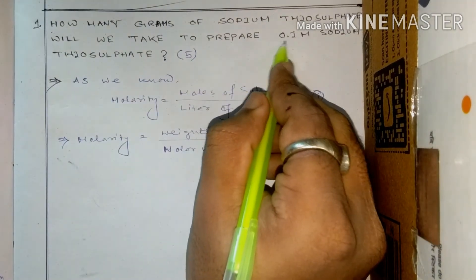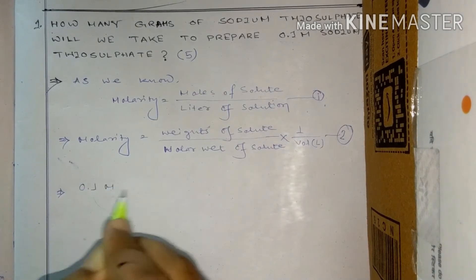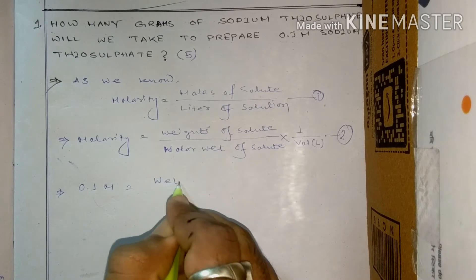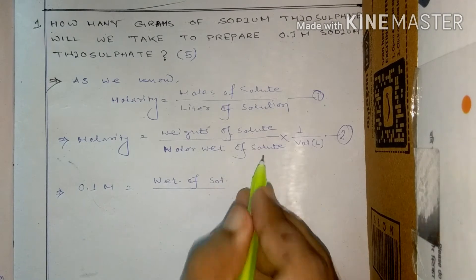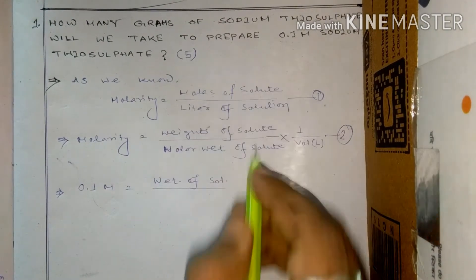Now as you know, this is 0.1 molar, and I am writing the abbreviation of that: weight of solute by molar weight. So we have to calculate what is the molar weight.